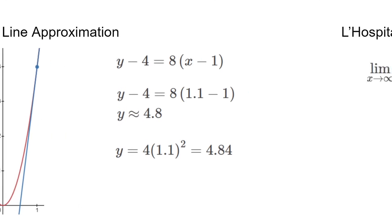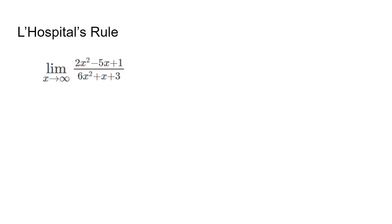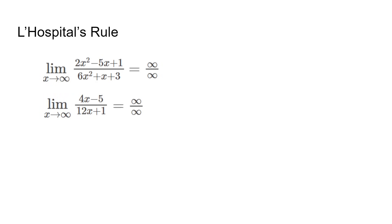The last topic is L'Hospital's rule. It applies to limits that lead to an undefined number when we plug in the value, for example 0 over 0 or infinity over infinity, and it tells us to take the derivative of both the top and the bottom, but separately. In this example, we plug in infinity and get infinity over infinity. Applying L'Hospital's rule lets us derive both the top and the bottom. However, we run into the same problem, so we can use L'Hospital's once again, and we finally get our answer: one third. Some problems only require one application, but some may take a few, so make sure to know when to use it properly.